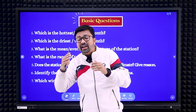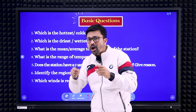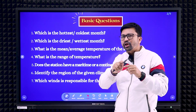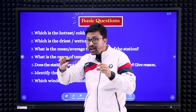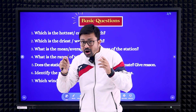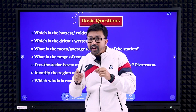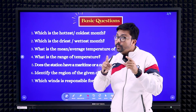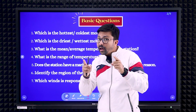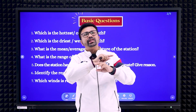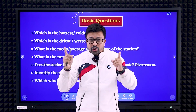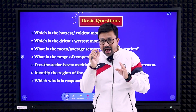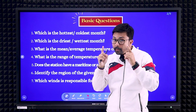Similarly, if the question asks for mean or average rainfall, you need to add all the months' rainfall and divide by 12. Or if it asks for the total amount of rainfall, then simply add all the rainfall values for the 12 months and give that as your answer.